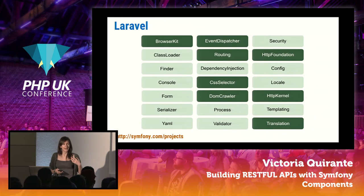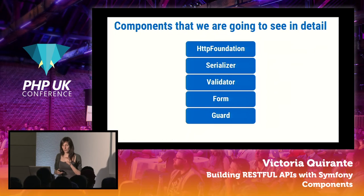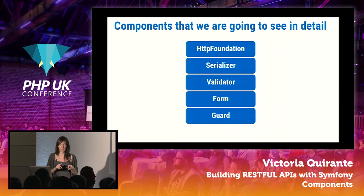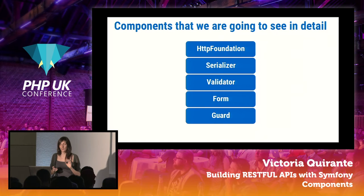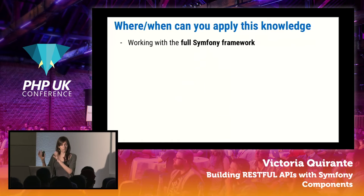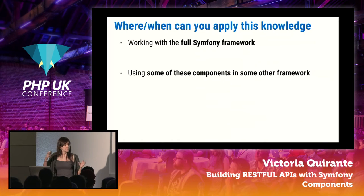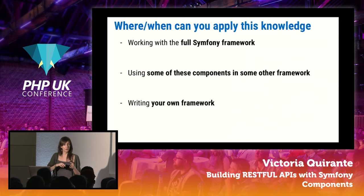In this talk, we are going to see in detail these five components: HTTP Foundation, Serializer, Validator, Form, and Guard. The knowledge you get from these components you can apply later in a few different situations: when you decide to use the whole framework, when you find these components in some other framework, when using some of them in your own code, or even when developing your own framework.